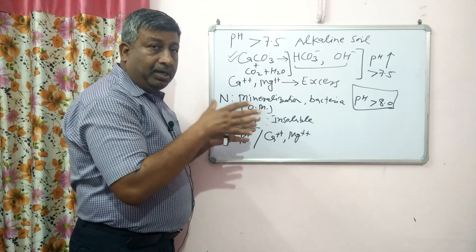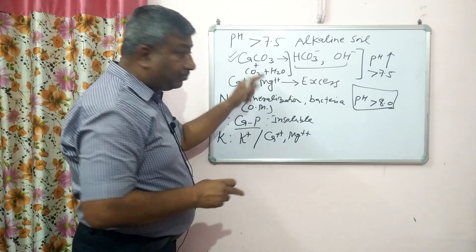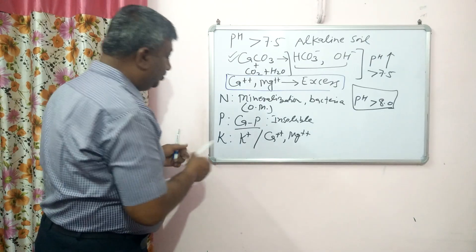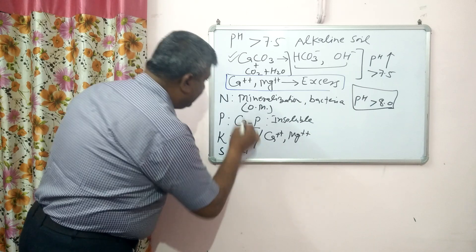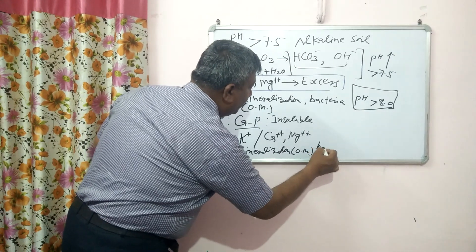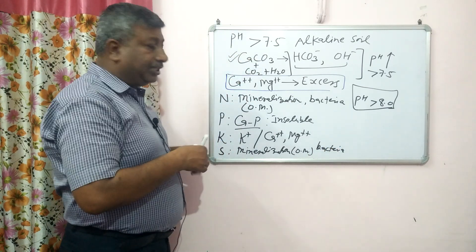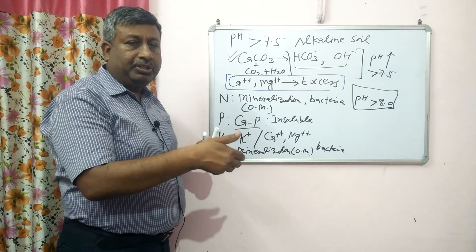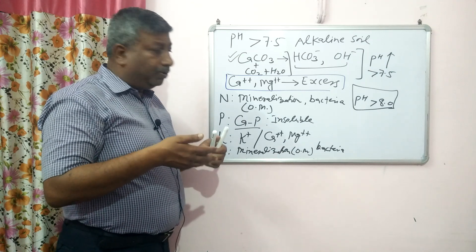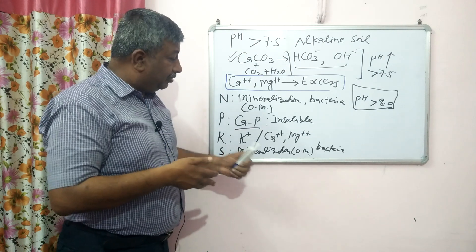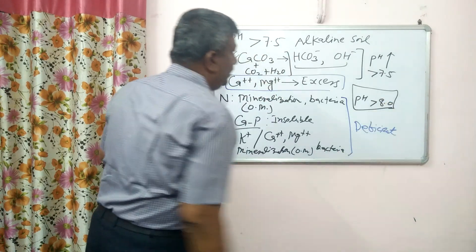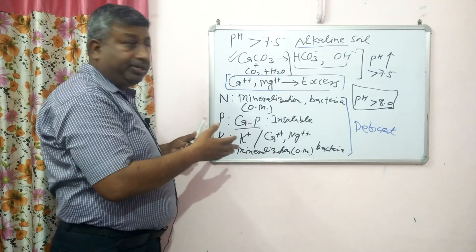So this is the reason that N, P, and K are deficient while calcium and magnesium are in excess in alkaline soils. Regarding sulfur, it is similar to nitrogen — sulfur is also available through mineralization because it is present in organic matter, and many bacteria are involved in sulfur transformation. At pH more than 8, bacterial activity is reduced, so sulfur availability is also reduced. So the major nutrients N, P, K, and S are deficient, while calcium and magnesium are in excess.